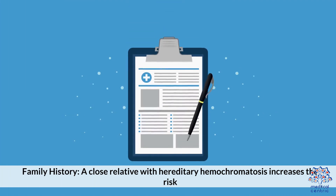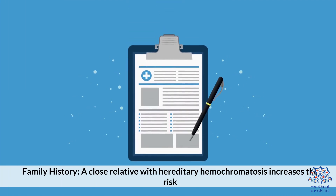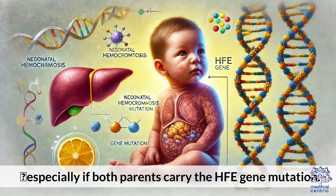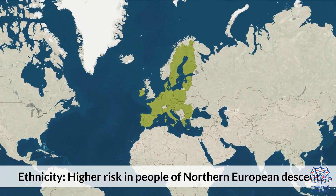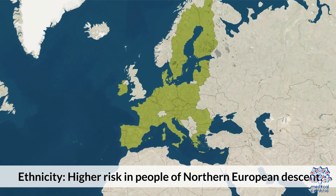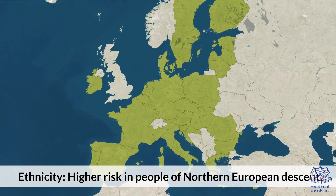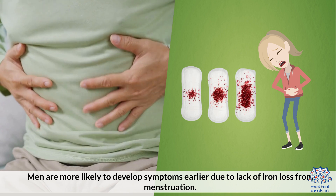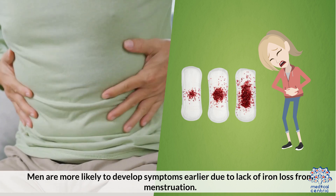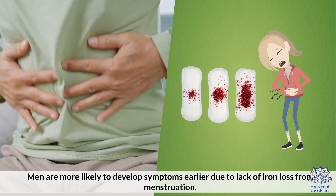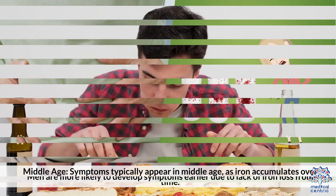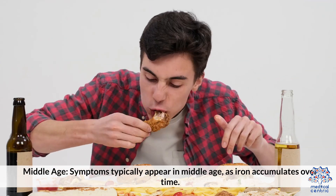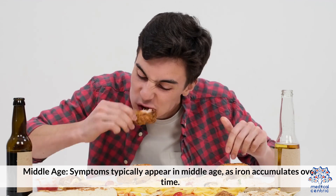Risk Factors: A close relative with hereditary hemochromatosis increases the risk, especially if both parents carry the HFE gene mutation. Ethnicity also plays a role, with higher risk in people of Northern European descent. Men are more likely to develop symptoms earlier due to a lack of iron loss from menstruation, and symptoms typically appear in middle age as iron accumulates over time.